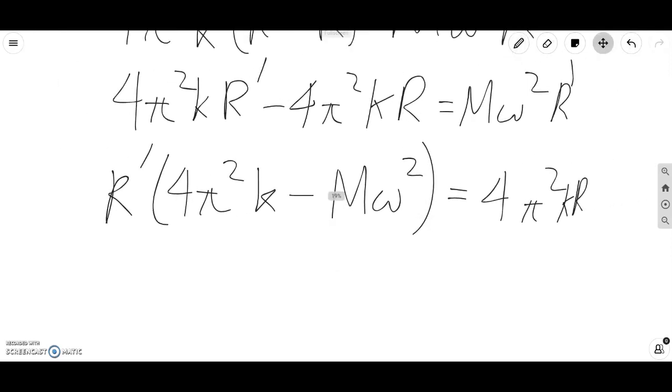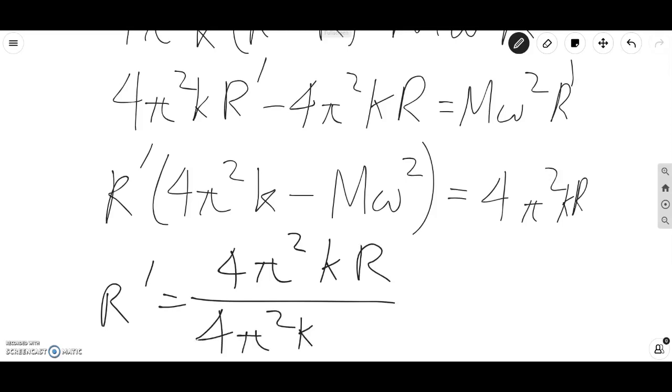Now we're ready to solve the problem. So now we simply have to divide both sides by 4 pi squared K minus m omega squared. And what we get is R prime equals 4 pi squared K R over 4 pi squared K minus m omega squared.